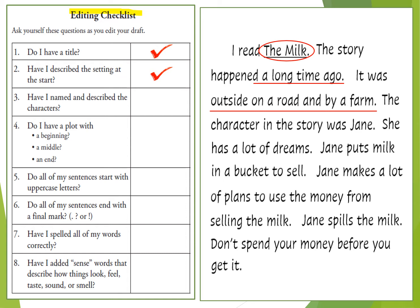Number three asks us: have I named and described the characters? Jane — she's right there and she has a lot of dreams too. I wrote that but I forgot to underline it when I was editing. Number four asks: do I have a plot with a beginning? There's my beginning. A middle — there's my middle. And an end — there's my end. Jane puts milk in a bucket to sell, she makes a lot of plans to use the money from selling the milk, and Jane spills the milk. Check — my plot is there.